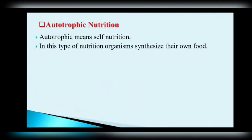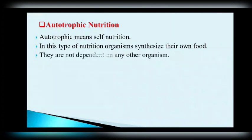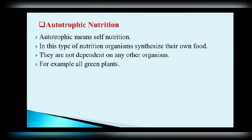First, autotrophic nutrition. What is the meaning of autotrophic nutrition? Auto means self, trophic means nutrition — so autotrophic means self-nutrition. In this type of nutrition, organisms synthesize their own food and are not dependent on any other organism. For example, all green plants make their food on their own with the help of sunlight. This type of nutrition is called autotrophic nutrition.